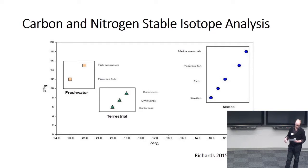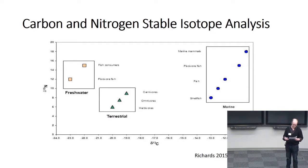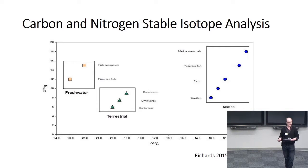Carbon stable isotope analysis is able to distinguish the proportion of C3 versus C4 plants in diet, with C3 plants resulting in lower carbon isotope values and C4 plants in higher values. Nitrogen isotope analysis provides the ability to determine the amount of animal protein in diet, because as animals are consumed, nitrogen isotopes fractionate such that an increase of around three parts per mil is seen with each step upwards in the food chain.